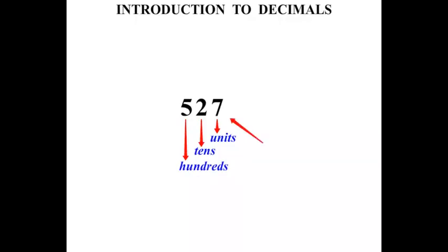Now if we put something after that whole number, a point, that is known as a decimal point. It separates the whole number part with a decimal part.